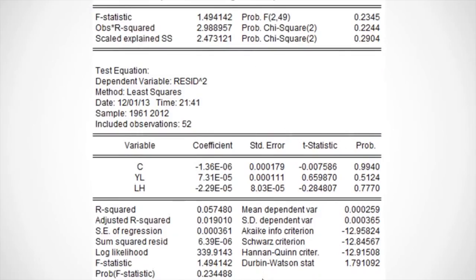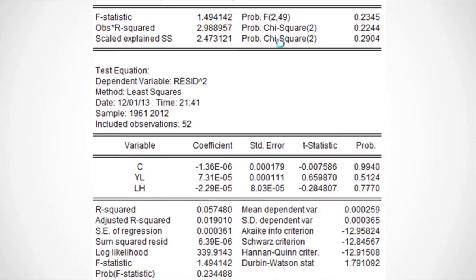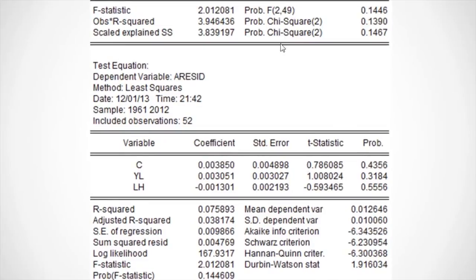The Breusch-Pagan-Godfrey test for heteroskedasticity shows a probability of 23%, which allows us to accept the null hypothesis that there is homoskedasticity in the model. The Glejser test shows a probability of 14%, which also allows us to accept the null hypothesis, and conclude that there is not a heteroskedasticity problem on this test.